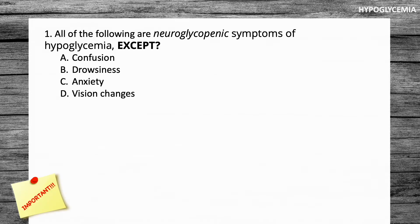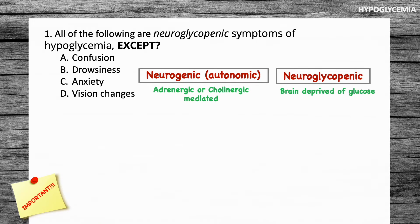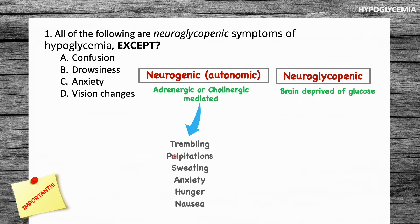Before we get to the answer, let's break up hypoglycemia into two parts. First we have the neurogenic or autonomic, and we also have the neuroglycopenic. The neurogenic refers to the autonomic nervous system — more specifically the adrenergic or cholinergic nervous system. When our glucose levels are low, this leads to activation of these nervous systems, resulting in symptoms including trembling, palpitations, sweating, anxiety, hunger, and nausea.